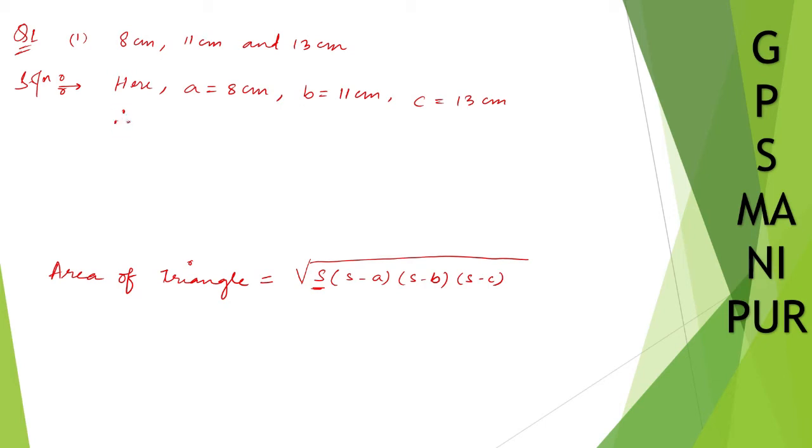So therefore S is equal to A plus B plus C divided by 2. This is how you are going to find out the value of S. A is 8, B is 11 and C is 13 divided by 2. So 8 plus 11 is 19, 19 plus 13 is 32 divided by 2 which is 16.